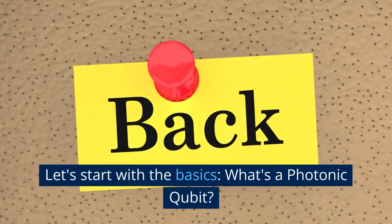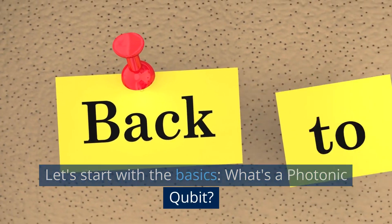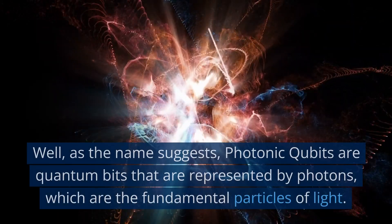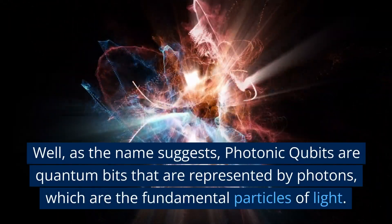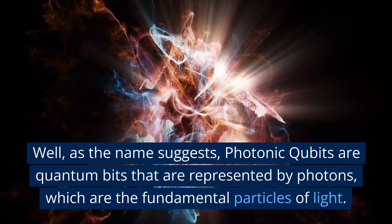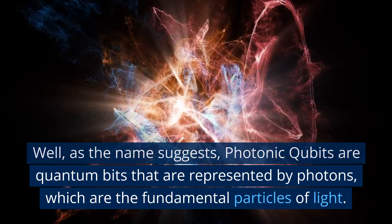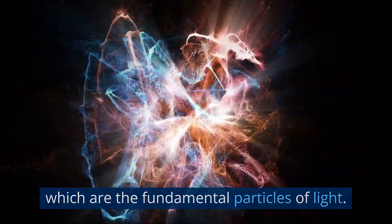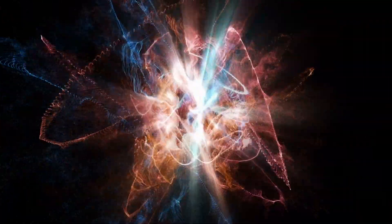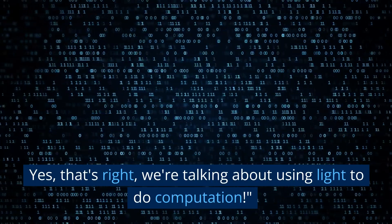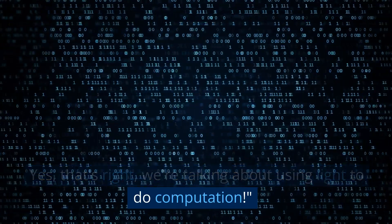Let's start with the basics — what's a photonic qubit? As the name suggests, photonic qubits are quantum bits that are represented by photons, which are the fundamental particles of light. Yes, that's right — we're talking about using light to do computation.